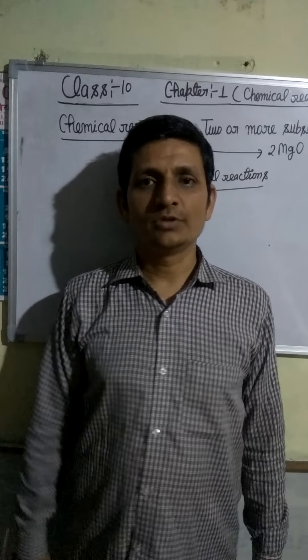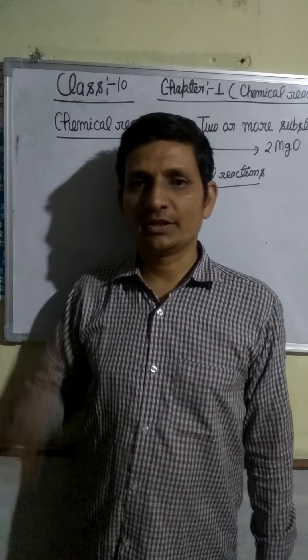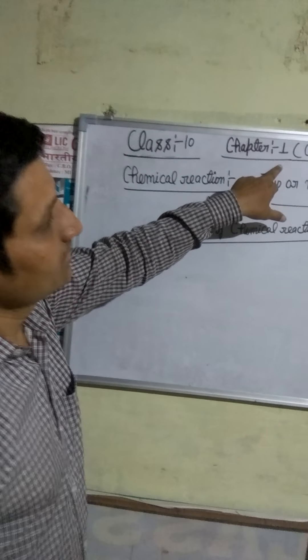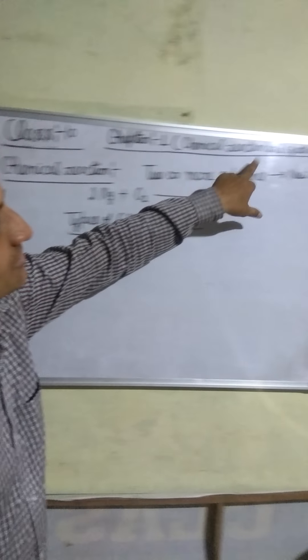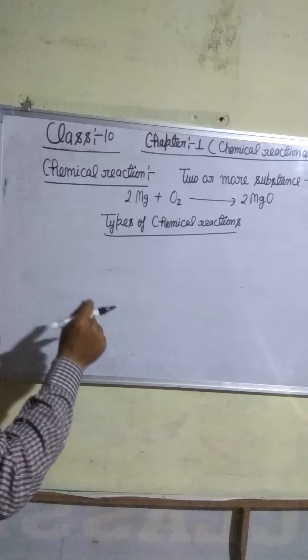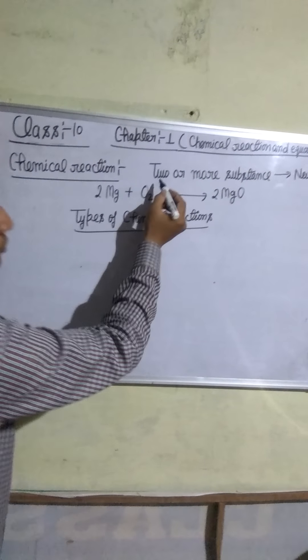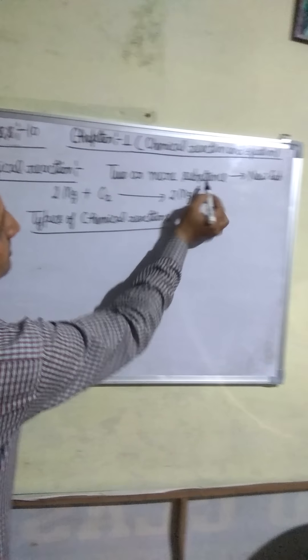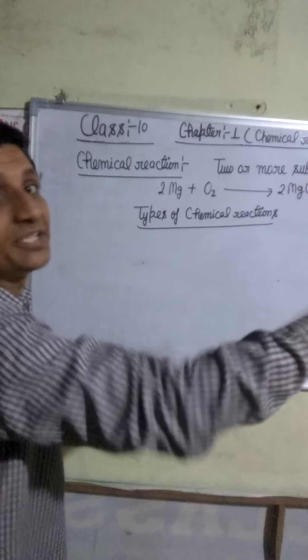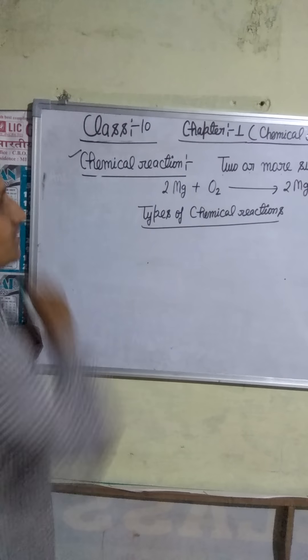Hello students, my name is Suryum Sukla. Welcome back to another video. Today I am telling you class 10th chapter 1, chemical reaction and equation. Topic is chemical reaction. A process in which two or more substances combine to form new substances with new properties is called a chemical reaction.